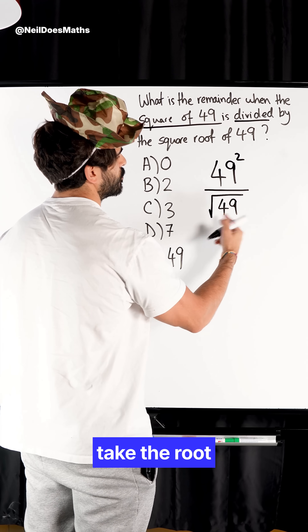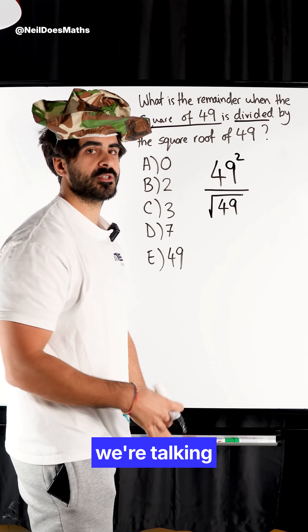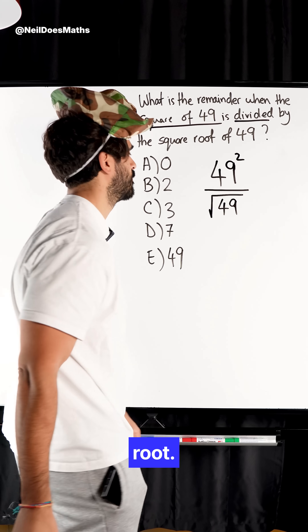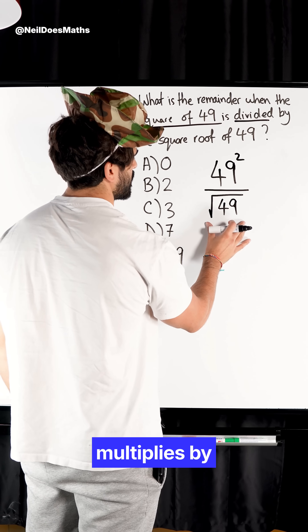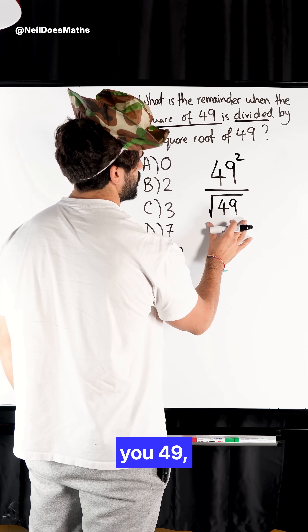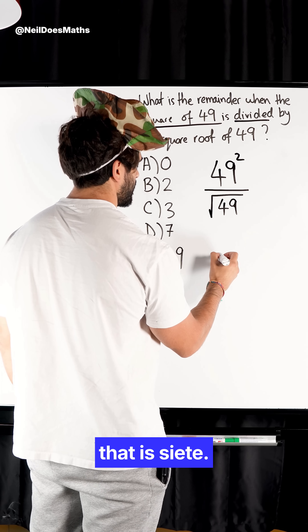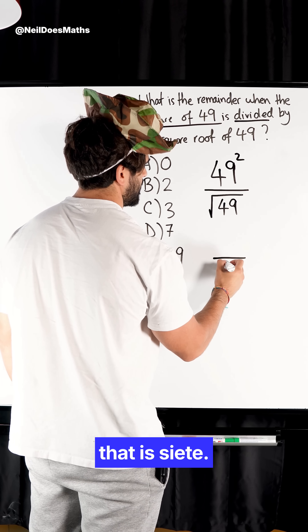Now, when we take the root of any number, we're talking about the principal root. So we're saying: what multiplies by itself to give you 49? That is siete — 7.